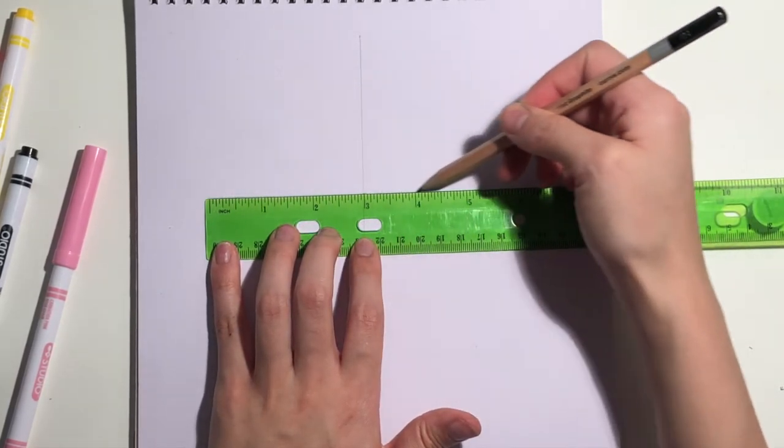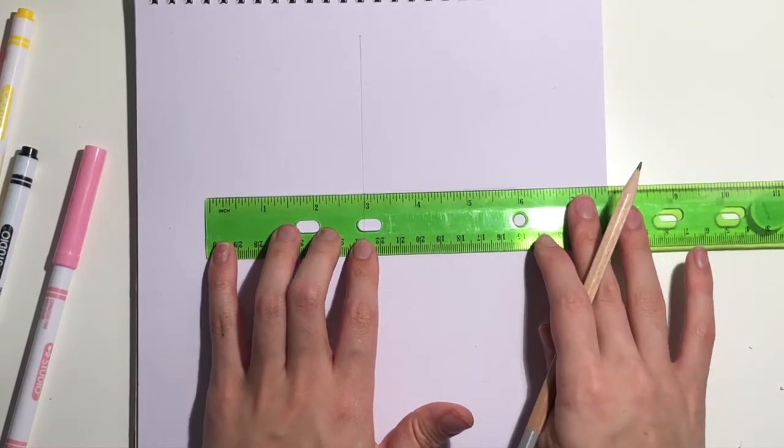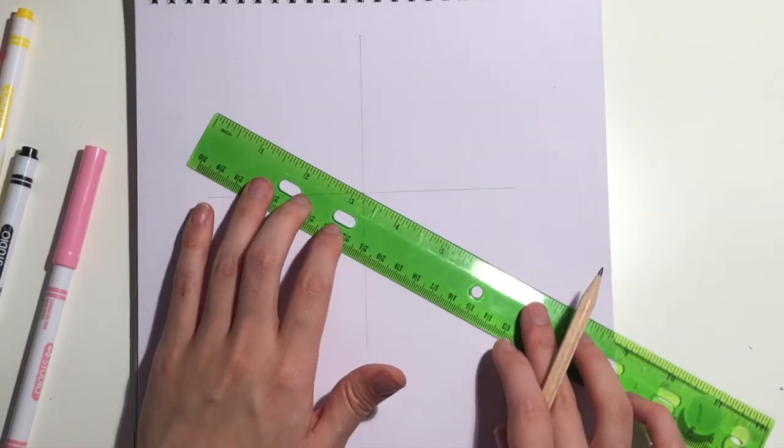Then while keeping the three on the center, draw two more lines diagonally going through the center point.